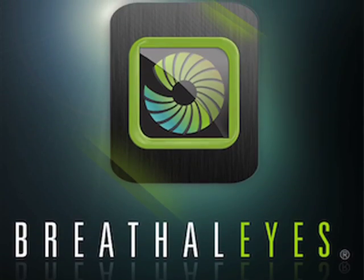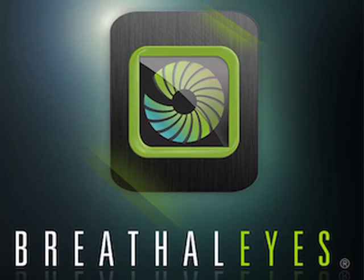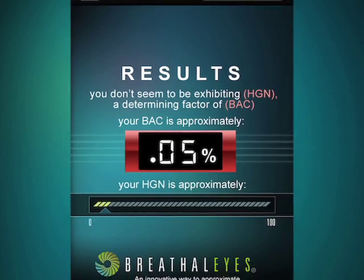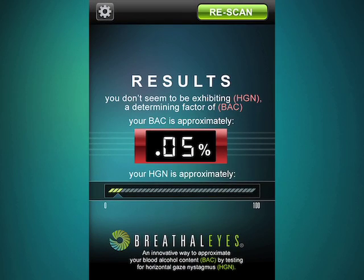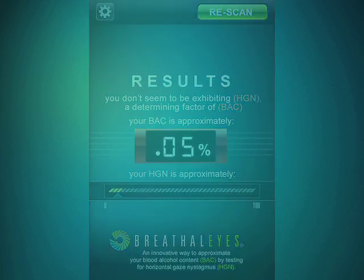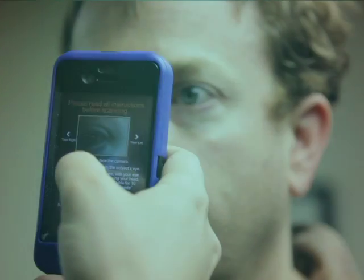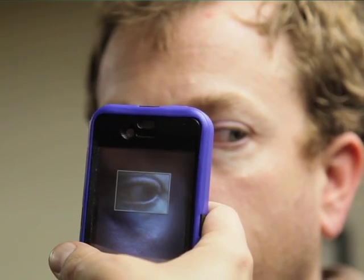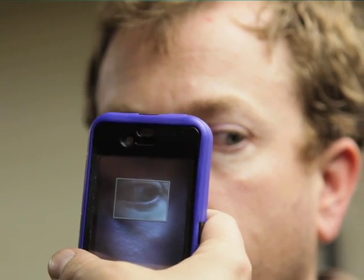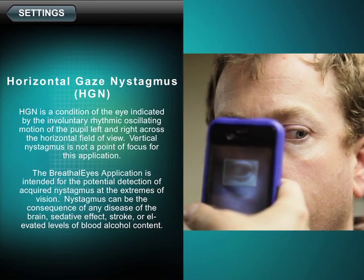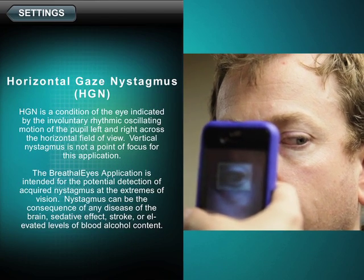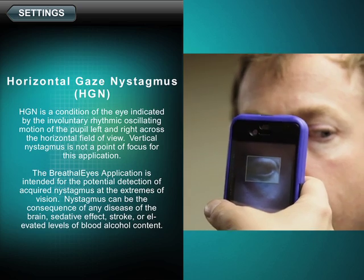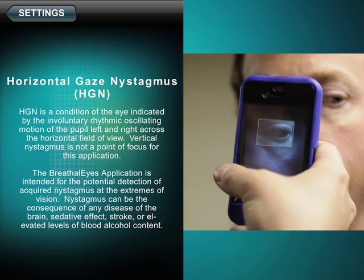Introducing Breathalize by ExploreApps. Breathalize is the best way to determine your blood alcohol content using nothing but your iPhone. Breathalize works by scanning the user's eye to measure for the presence of horizontal gaze nystagmus. HGN is the involuntary fluctuation of the eye as it nears the outside of the face, one cause of which is the consumption of alcohol.